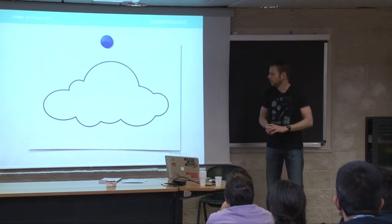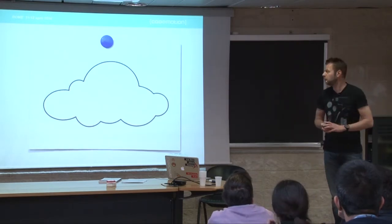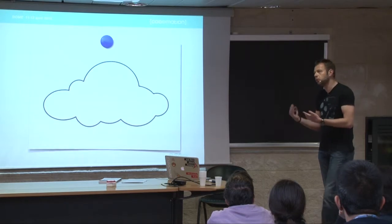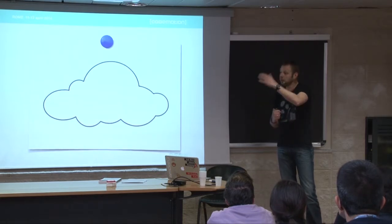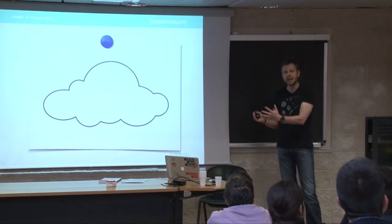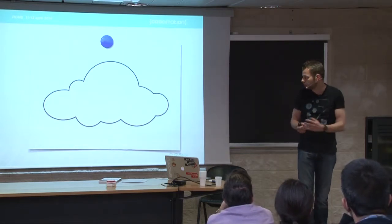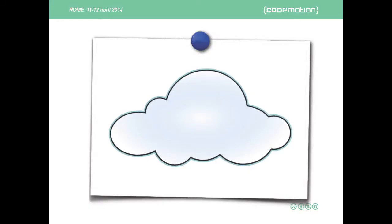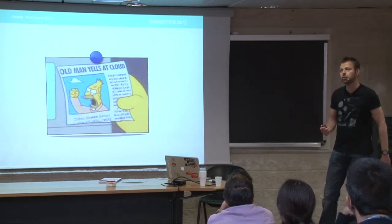Then comes the cloud. The cloud takes all your pains away - at least that's what they say. But in reality it's actually making things a little more complex. Non-functional system characteristics like distribution, scalability, and performance tend to be a little different when you go to the cloud. You have to deal with highly distributed systems and deploying software from your machine onto a machine somewhere on the other end of the internet. So we don't want to be old man yelling at cloud - we want solutions for these practical problems.